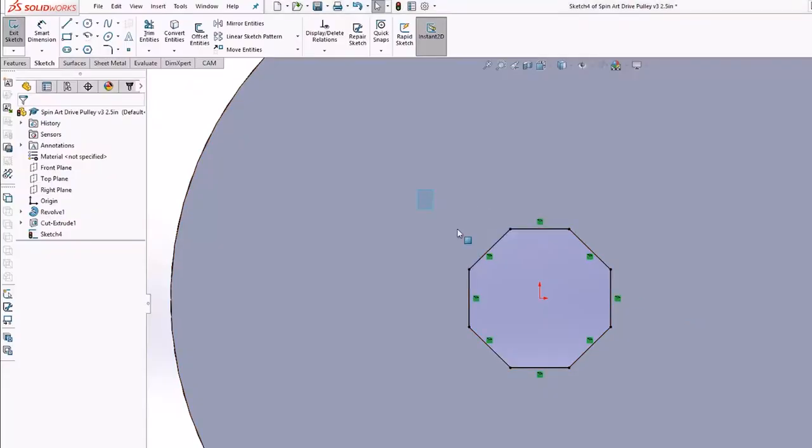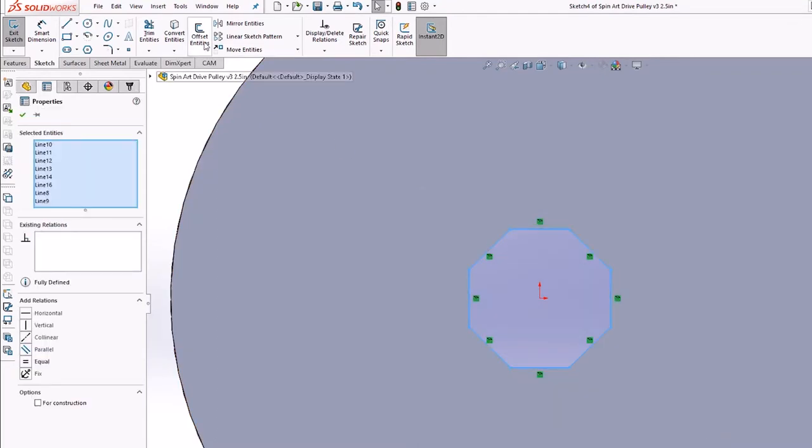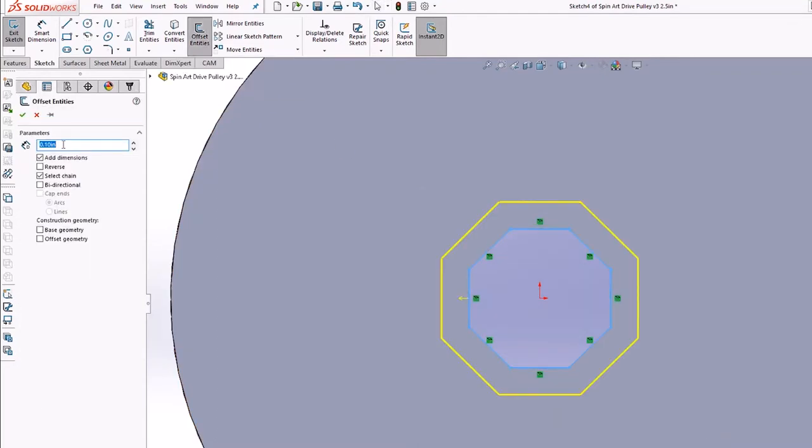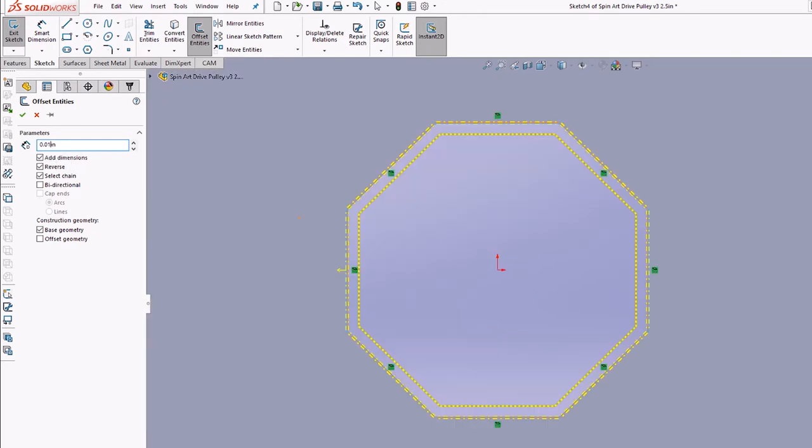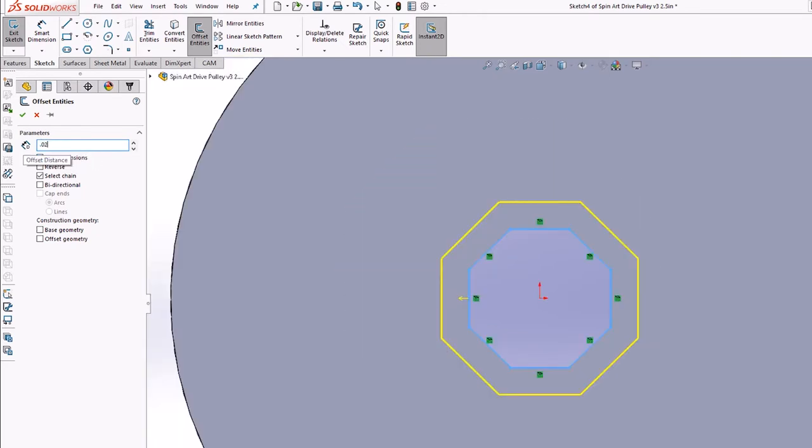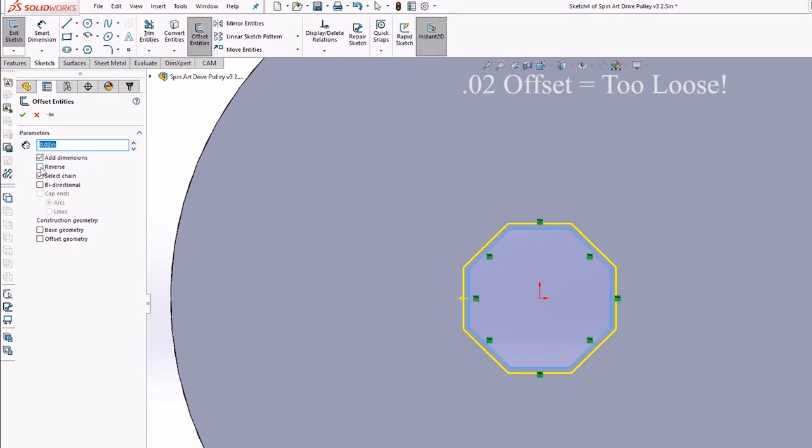Now pay attention to this. If you have concentric circles or something, you need to make sure that you offset by 10 thousandths so that the total is 20. If you offset your figures by 20 thousandths then you'll have a 40 thousandths difference and that's simply way too loose. This of course works for any shape.